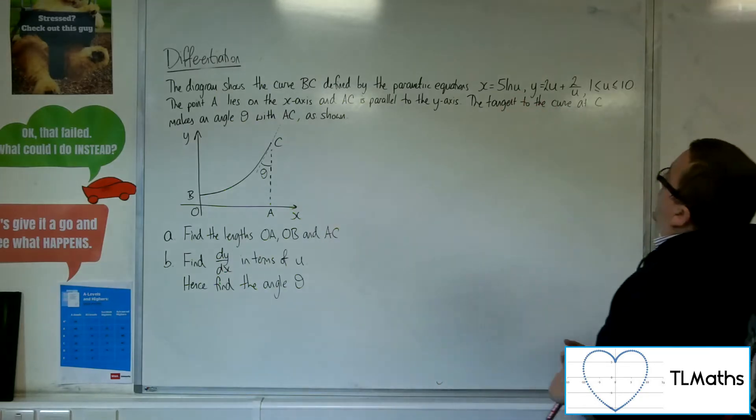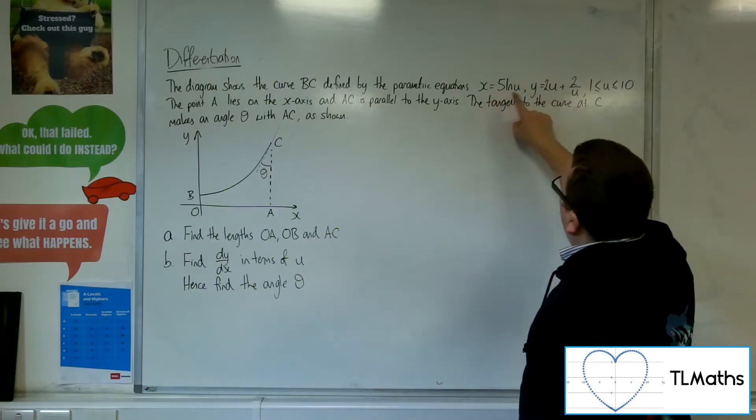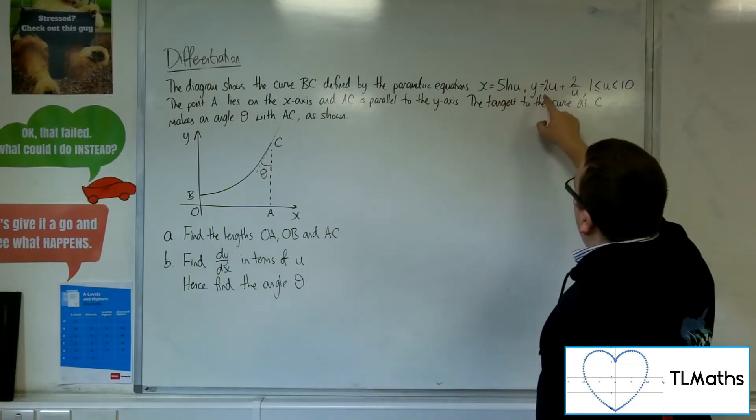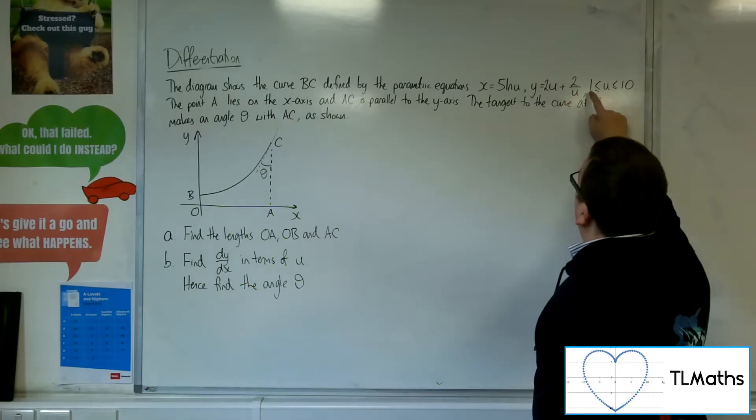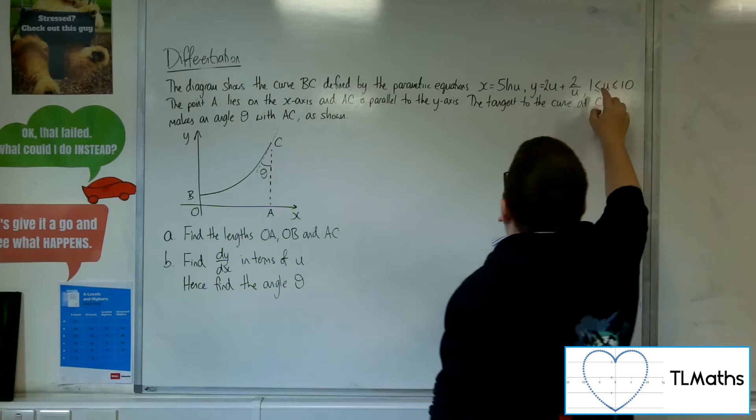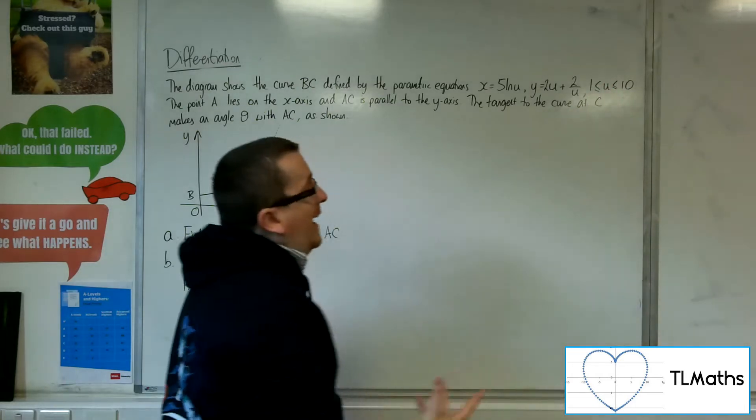So really, what does this curve mean? Well, first of all, have a look at this. So x equals 5 log u, y equals 2u plus 2 over u, where u is going between 1 and 10. Really, you need to interpret where its starting and end points are.